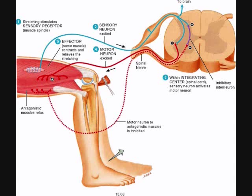We also have cranial reflexes, which originate in the brainstem and use cranial nerves. We have somatic reflexes that involve contraction of skeletal muscles, like we're going to be looking at here, and autonomic reflexes, which control a lot of our viscera, like our cardiac muscle, our glands, etc. But we're going to focus on the spinal reflexes, the somatic reflexes here.